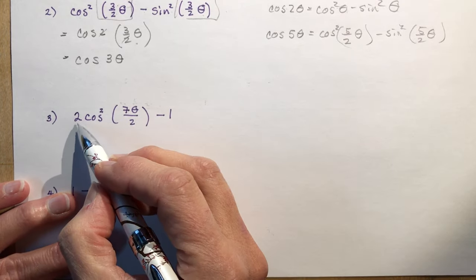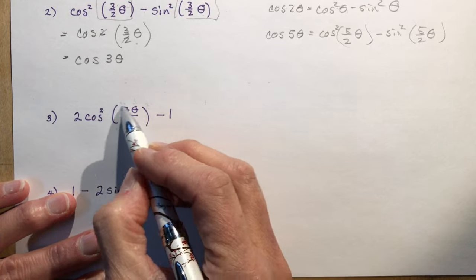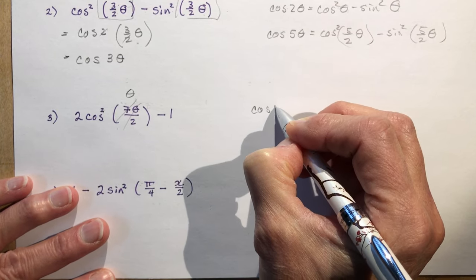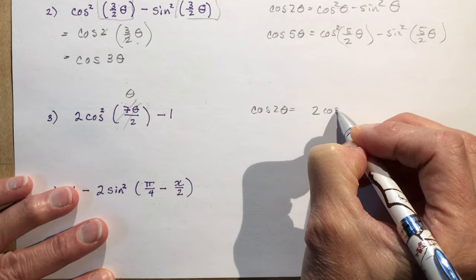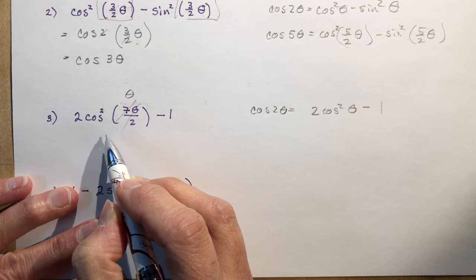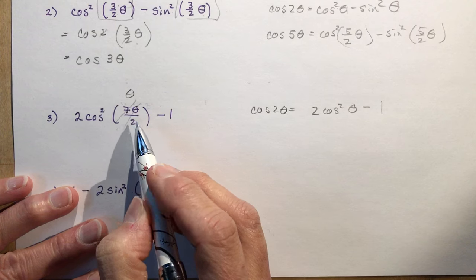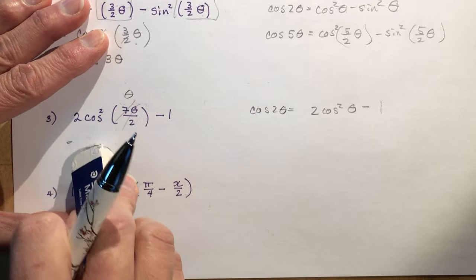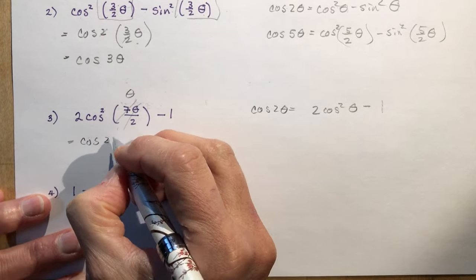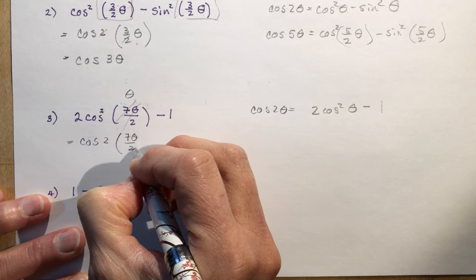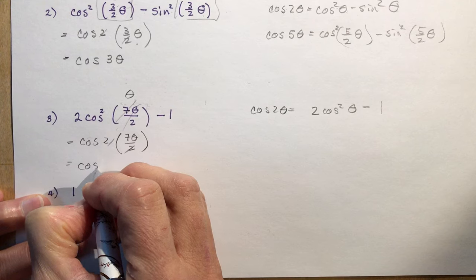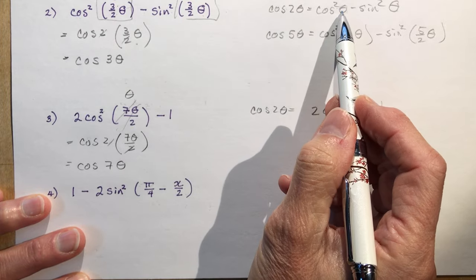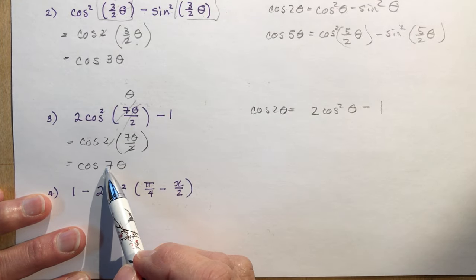For 2 cos squared (7θ/2) minus 1 — forget what's inside and call it theta. 2 cos squared θ minus 1 is cos 2θ. So this is cos of 2 times (7θ/2). The 2 and the 2 in the denominator cancel, giving cos 7θ. Just as we went from 2θ to θ before, here we go from 7θ to 7θ/2.